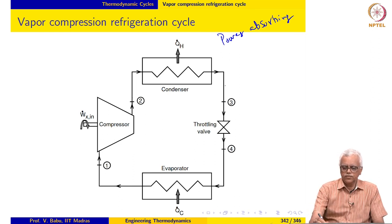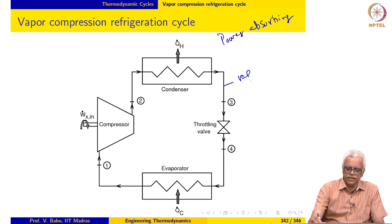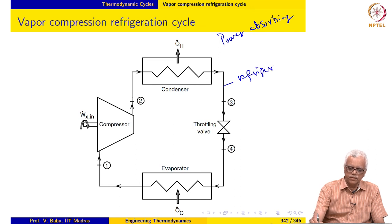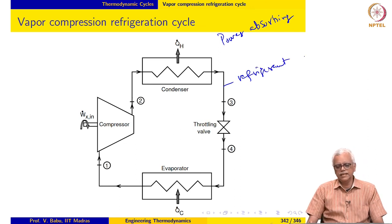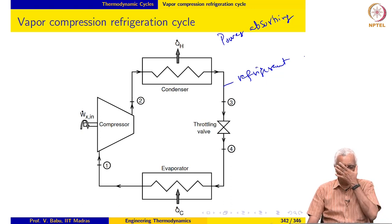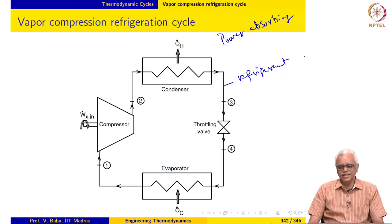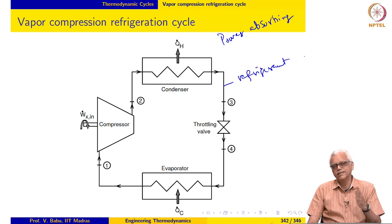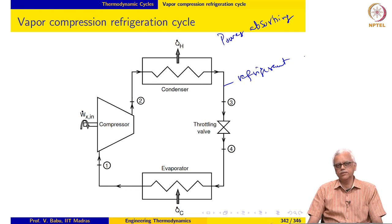The refrigerant executes a cyclic process in this process. And interestingly enough, even in the real life refrigerator or air conditioner, the refrigerant executes a cyclic process. It may be treated as a system and it executes a cyclic process unlike the Brayton cycle.